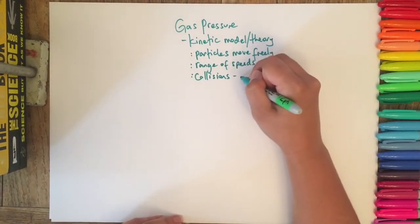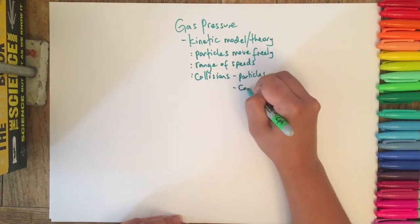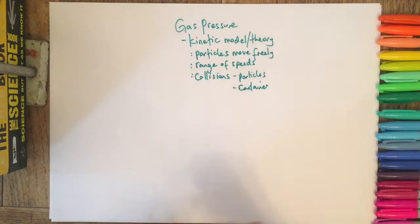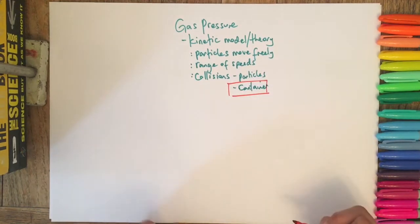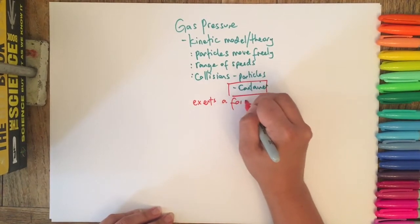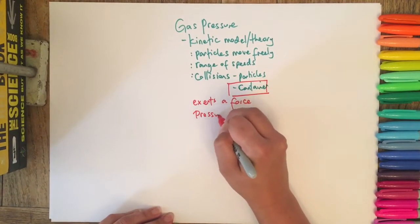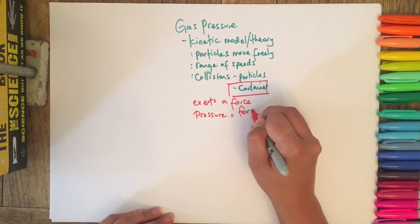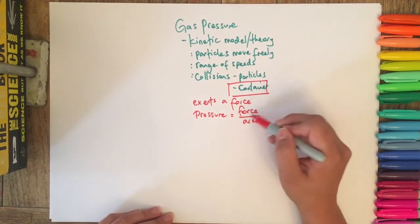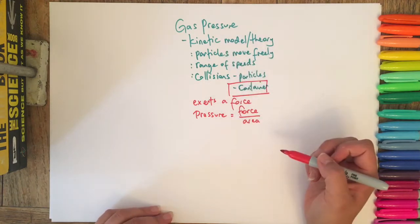These collisions are between the particles and with the container, and actually it's these collisions with the container that we really want to be thinking about because this exerts a force. It might be a tiny force but it's a force nonetheless. Hopefully you know, probably from key stage 3, the pressure is force over area. So the area that we're talking about is the wall of the container and the force that's being exerted is the collision of the particles that are moving.